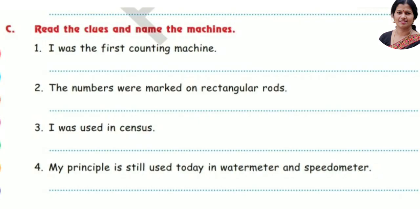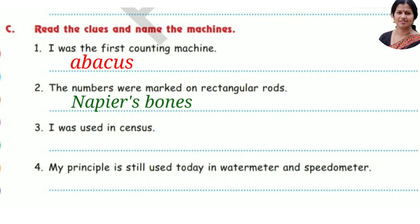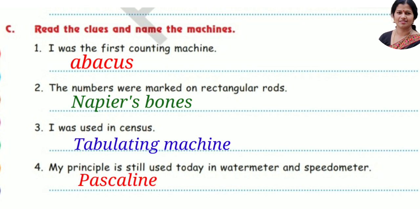Now read the clues and name the machines. Number one: I was the first counting machine — Abacus. Number two: the numbers were marked on rectangular rods — Napier's Bones. Number three: I was used in censuses — Tabulating Machine. Number four: my principle is still used today in water meters and speedometers — Pascaline.